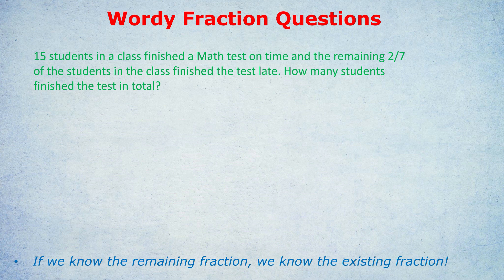the reason why you're finding it confusing is because the first part of the sentence gave us an amount, 15 students, and the second half of the sentence gave us a fraction. It talks about the remaining two-sevenths of the students, and that's conflicting information in a way. It's confusing an amount with a fraction. So what do we do?